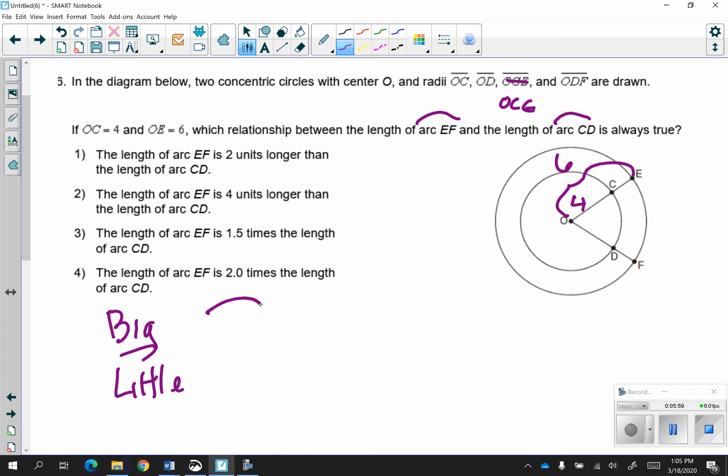What are we comparing? We are comparing arc EF to arc CD. And remember, since they grow proportionately, everything in the circle grows proportionately, like the radii. So the radii, if we look at arc EF, the radii of that circle is 6, and if we look at arc CD, the radii is 4, and that reduces to 1.5. The length of arc EF is 1.5 times the length of arc CD.